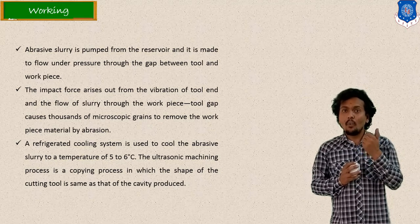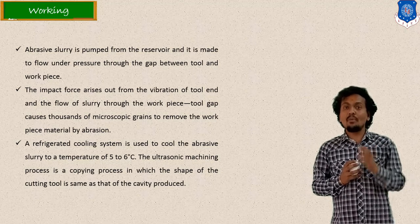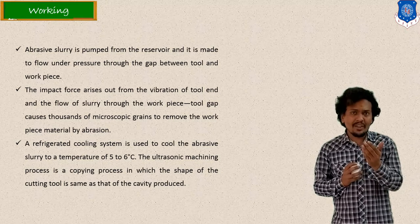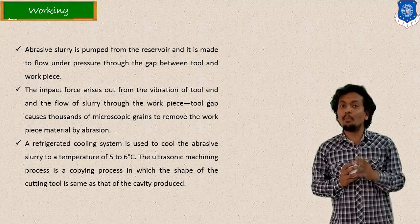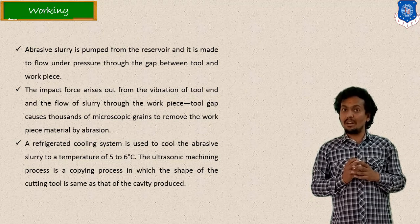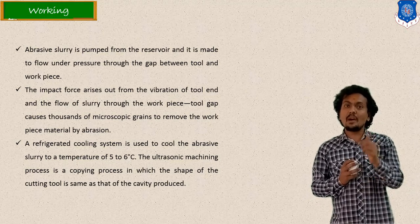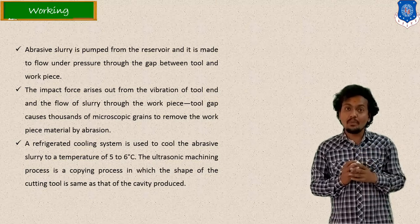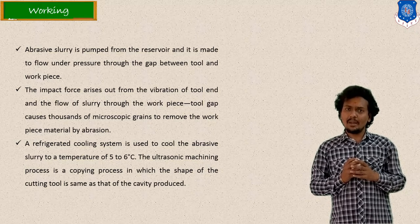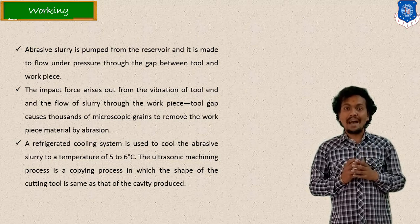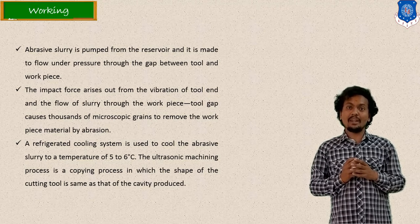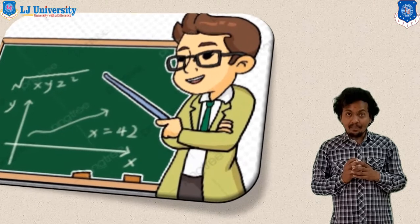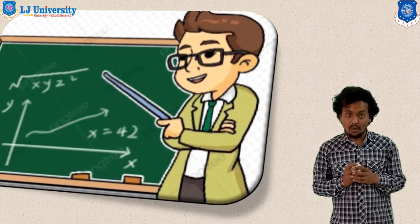Why is it called brittle fracturing? Because this type of fracturing is possible in brittle material only. In ductile material, there is a yield point and the material deforms beyond it, so this fracturing is not possible. In brittle material, the material fractures beyond the ultimate point. When vibratory motion is applied beyond the fracture point in brittle material, the material can be cut. Therefore, Ultrasonic Machining is best suited for brittle materials. Thank you all.